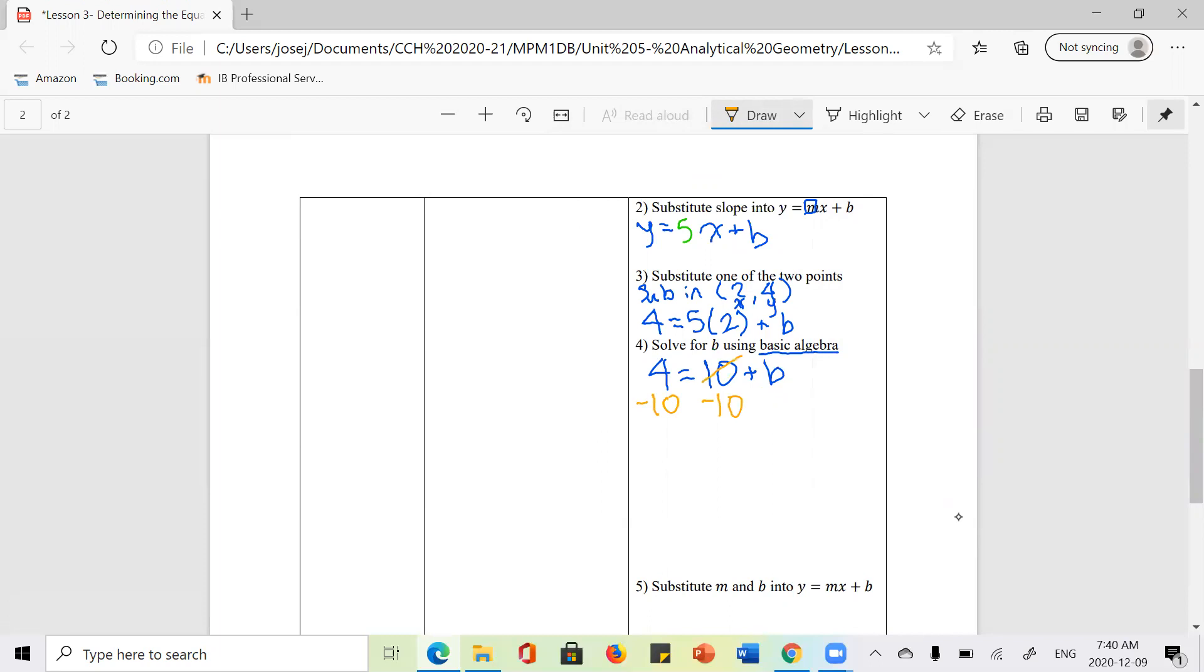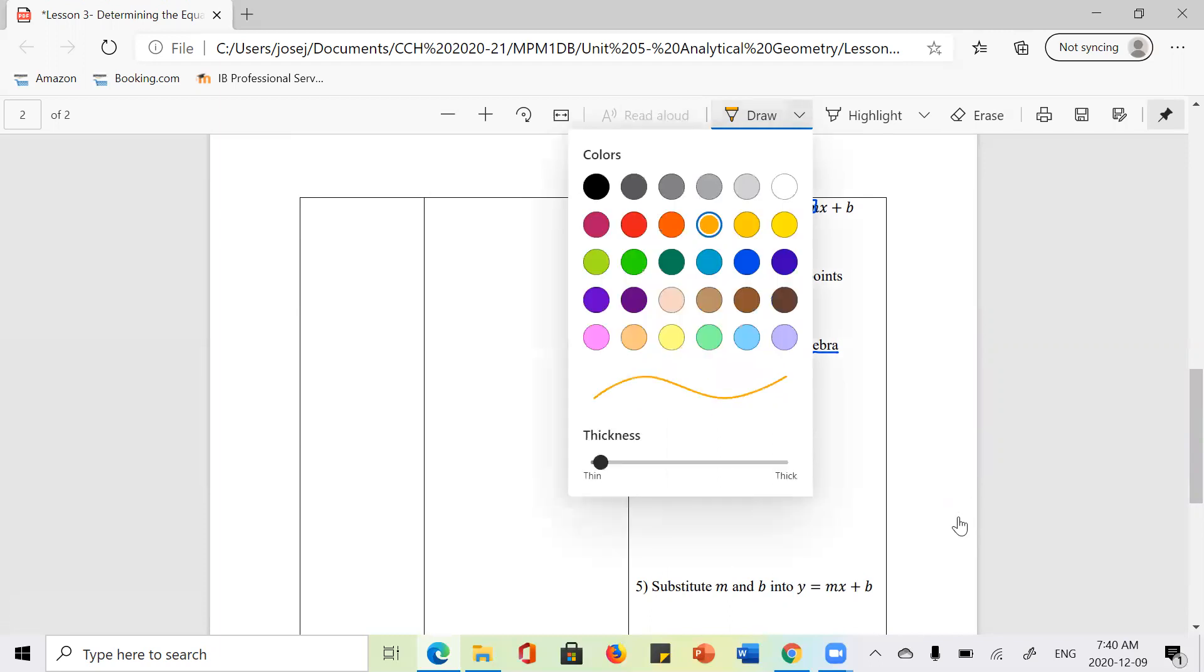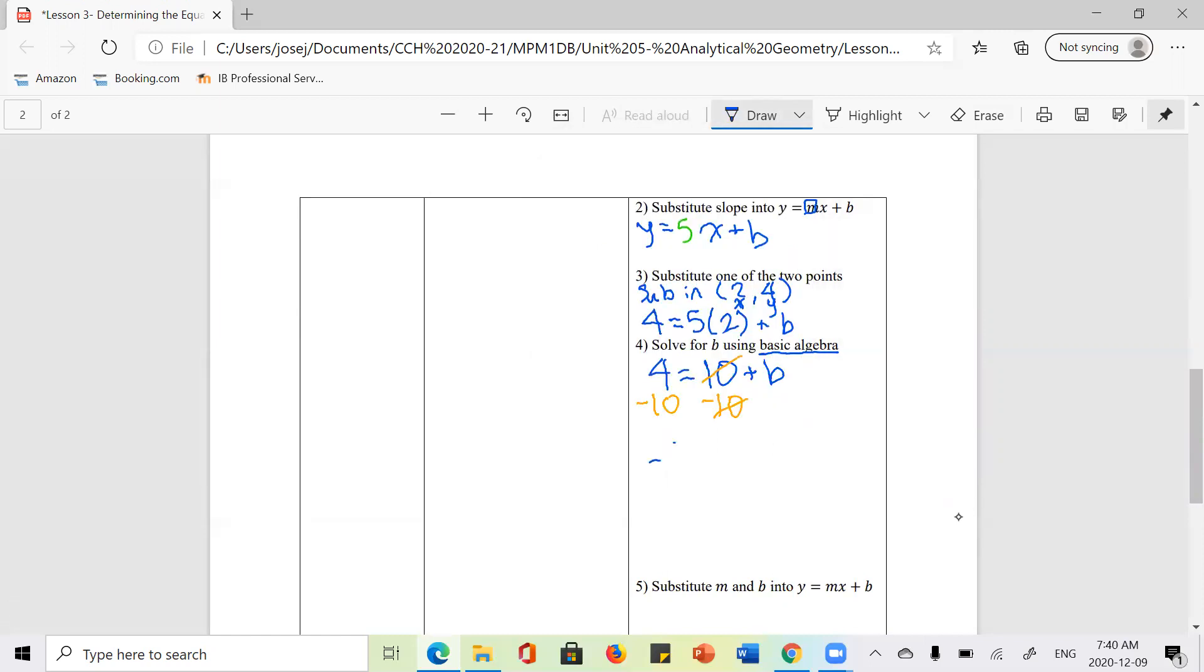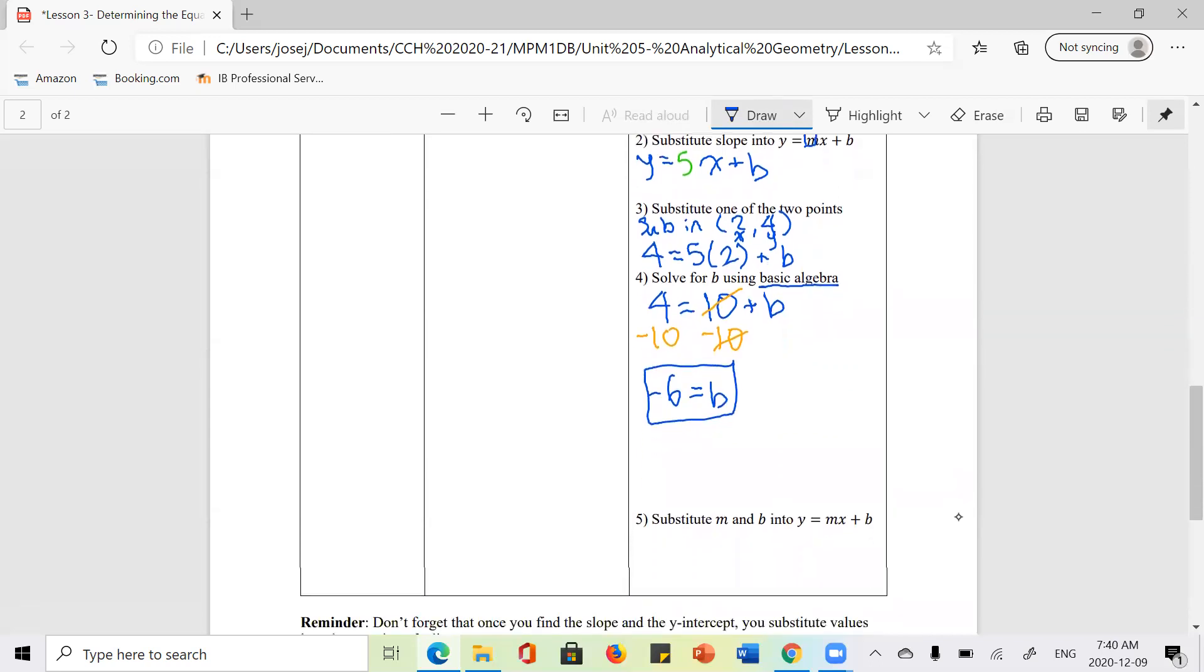And then by doing that, I actually eliminate the 10 on the right-hand side. Now I'm left with negative 6. Negative 6 is equal to b, which is exactly what I wanted. Just keep in mind, the only difference between what we're doing now and what you'll do in some questions is that every now and then you'll end up with fractions as slopes or x and y coordinates that are fractions.